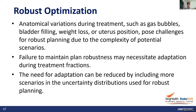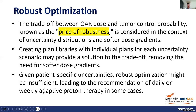The trade-off between OAR dose and tumor control probability — known as the 'price of robustness' — is considered in the context of uncertainty distributions and softer dose gradients. Creating plan libraries with individual plans for each uncertainty scenario may remove the need for softer dose gradients. Given patient-specific uncertainties, robust optimization might be insufficient, leading to the need for daily or weekly adaptation therapy in some cases.